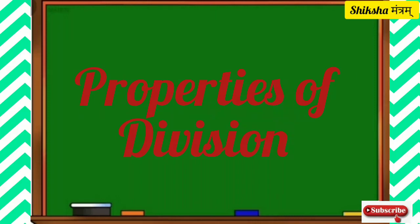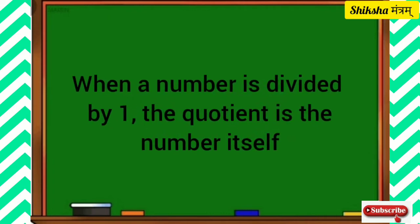Properties of division. First property: division by 1. When a number is divided by 1, the quotient is the number itself. Let's understand this property by some examples.